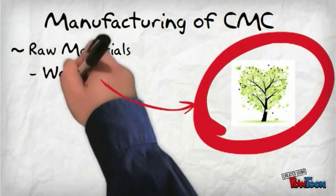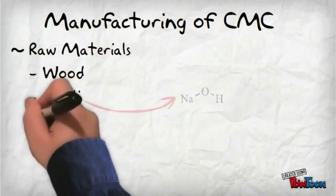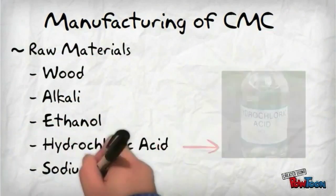Raw materials required for manufacturing of CMC are wood, alkali, ethanol, hydrochloric acid, and sodium chloroacetate in alcohol.